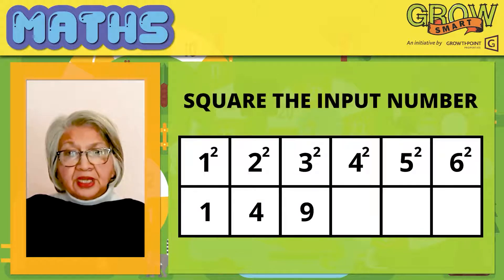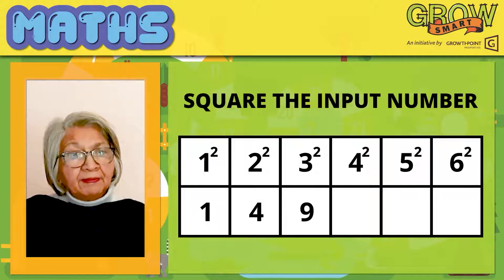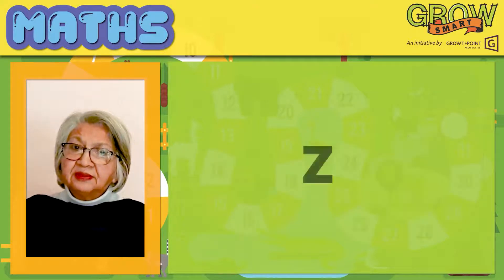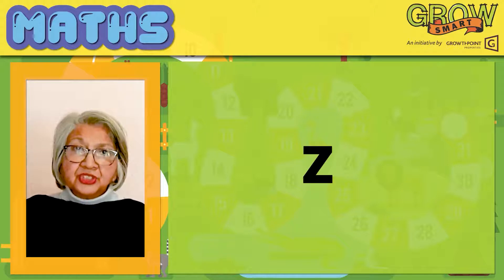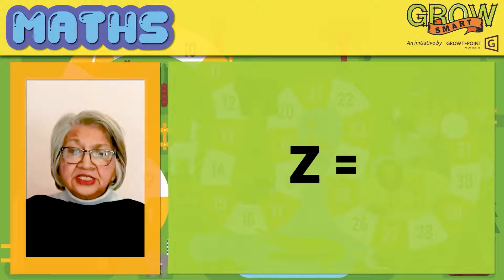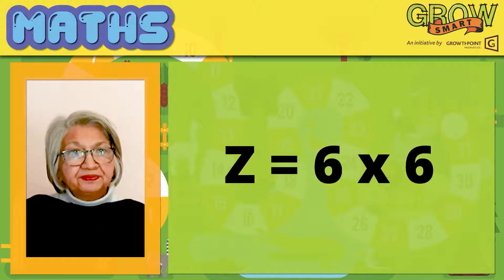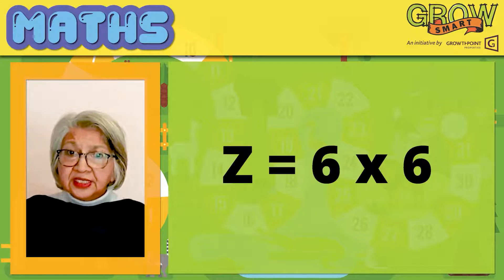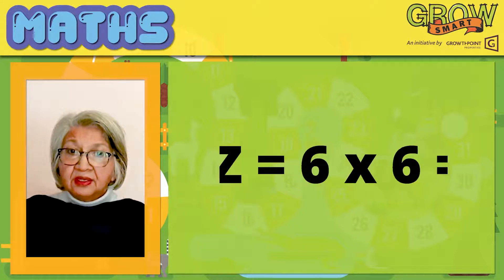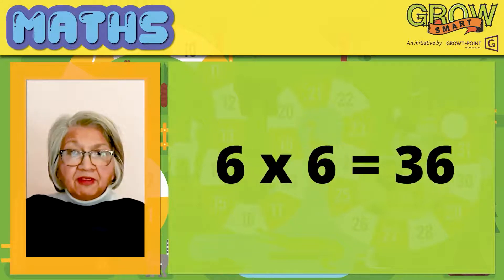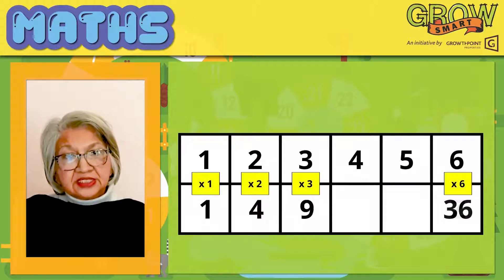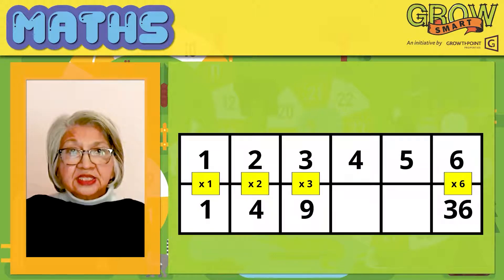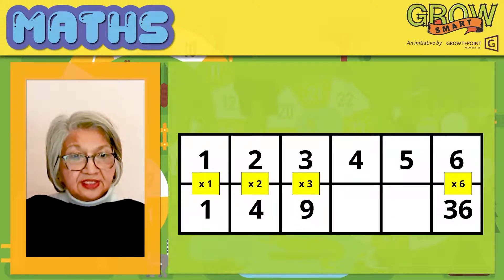All the output numbers are square numbers. How do we get Z? That's easy — all we have to do is multiply 6 by 6, and the answer is 36. Therefore, Z is equal to 36. 36 must replace Z.